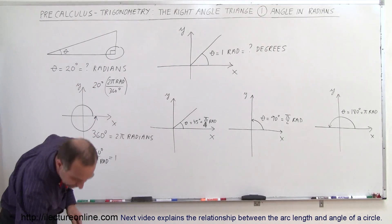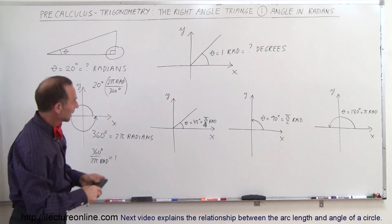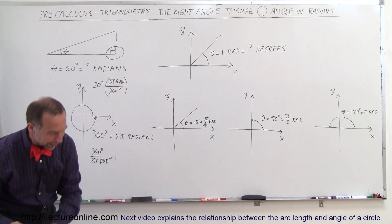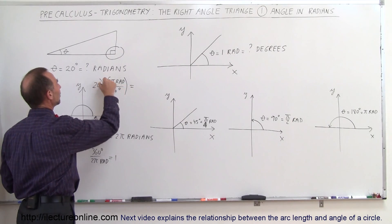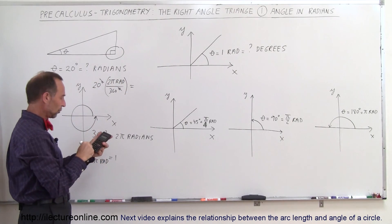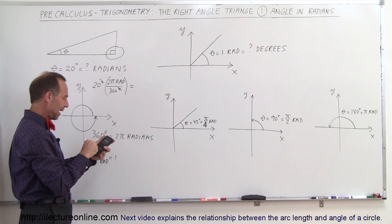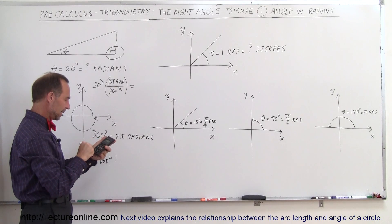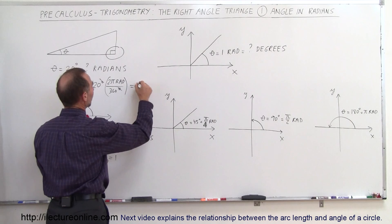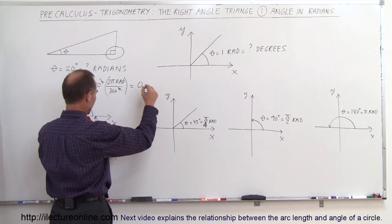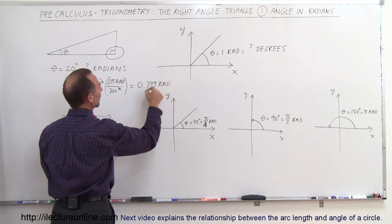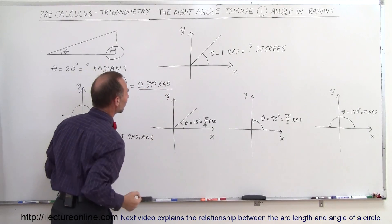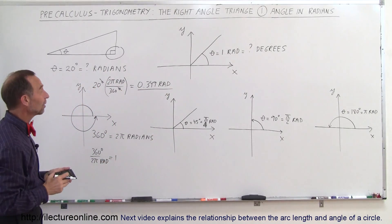We need a calculator any time we deal with the number pi. The degrees cancel out, leaving us with radians. So we calculate 20 times 2 times π divided by 360, and we get 0.349 radians. That's not an exact number, but to three decimal places, that's the answer.